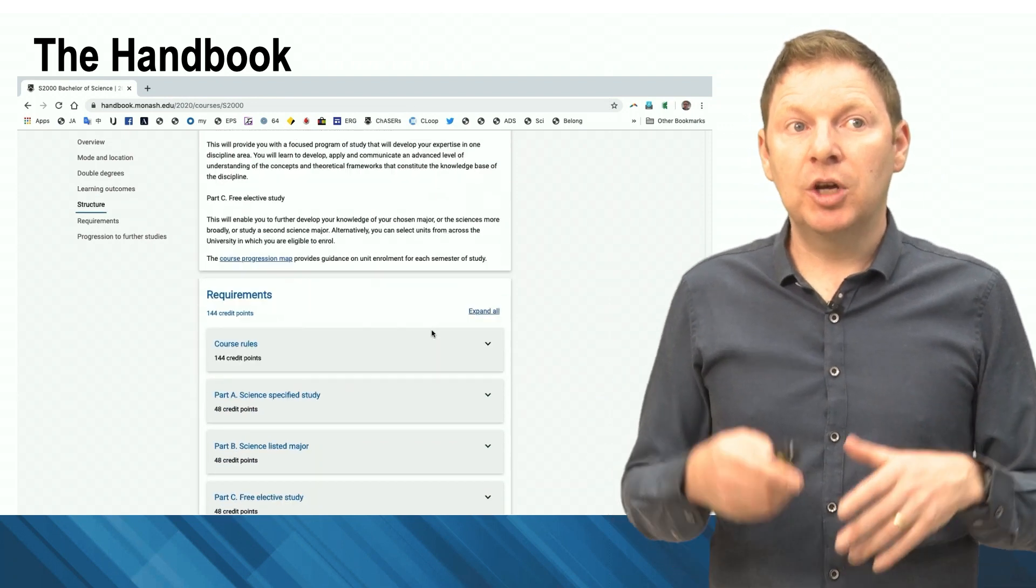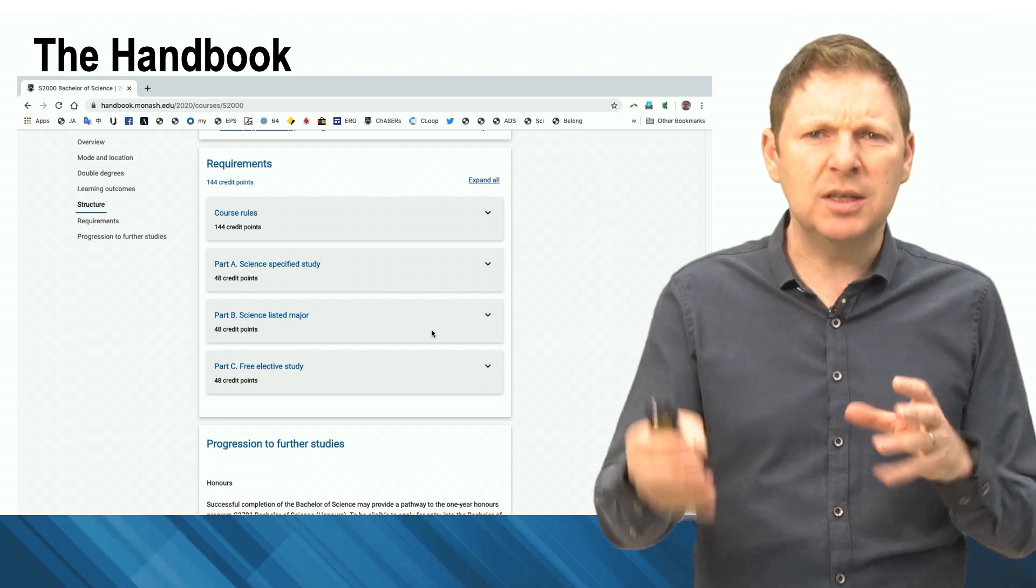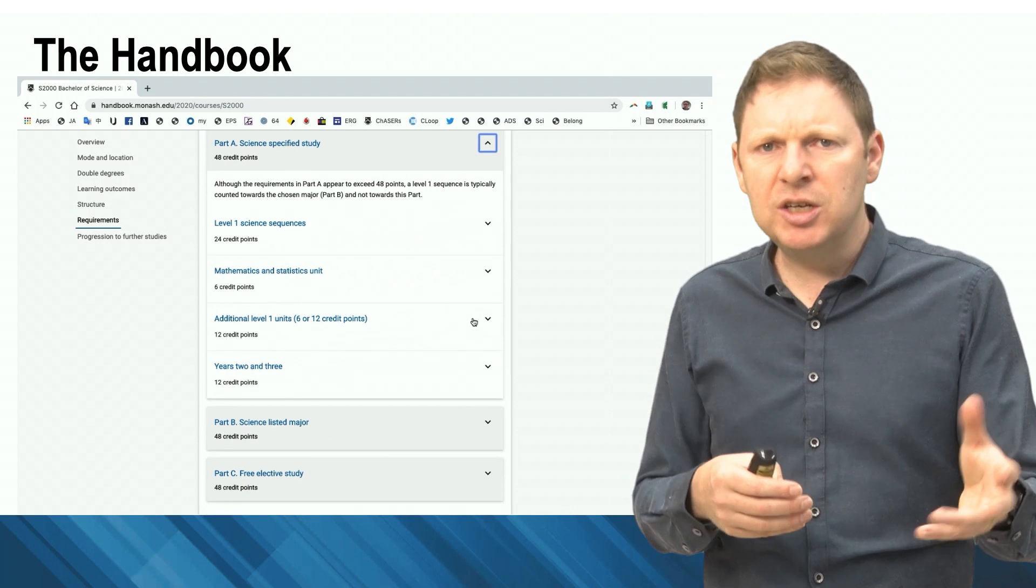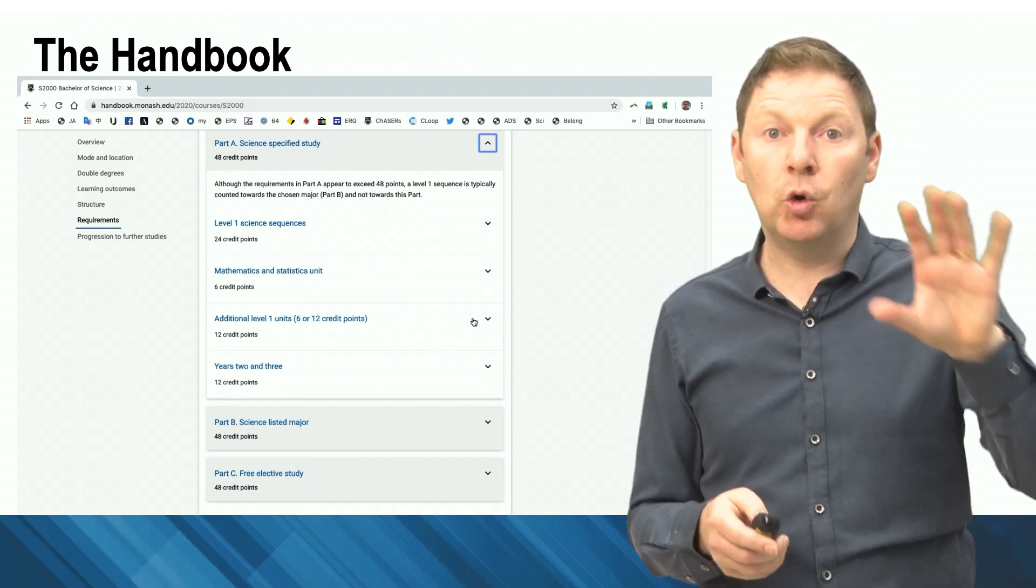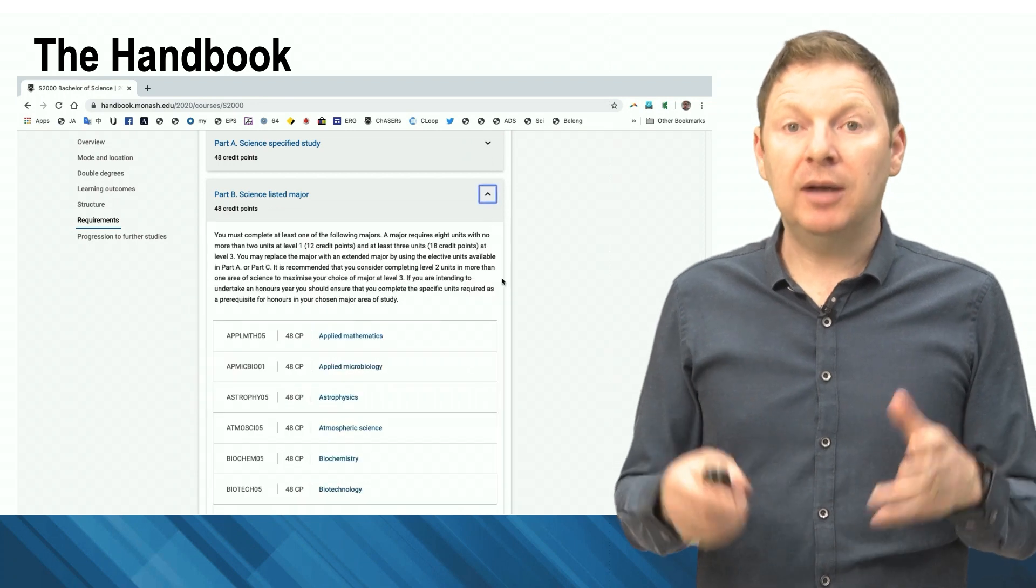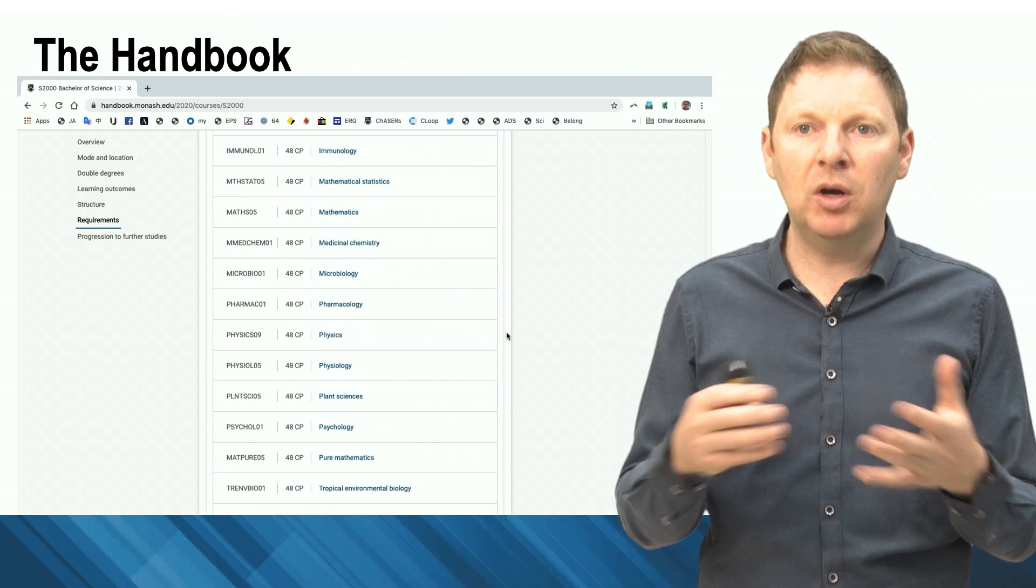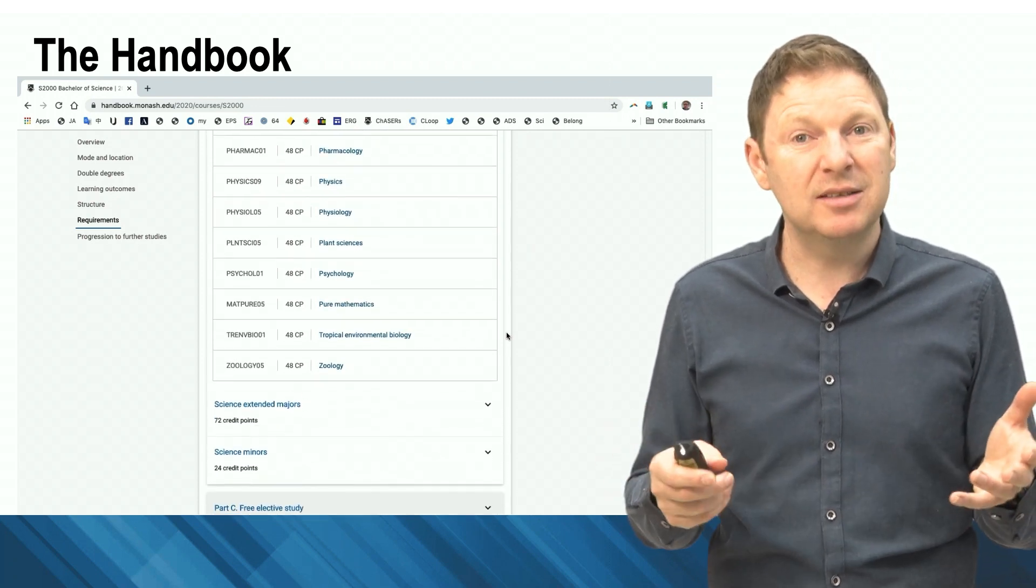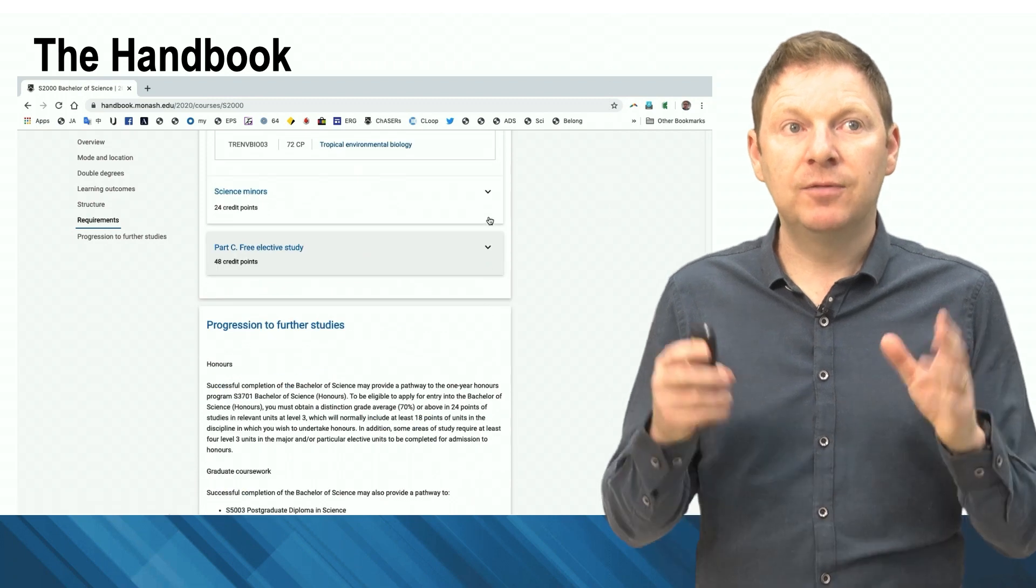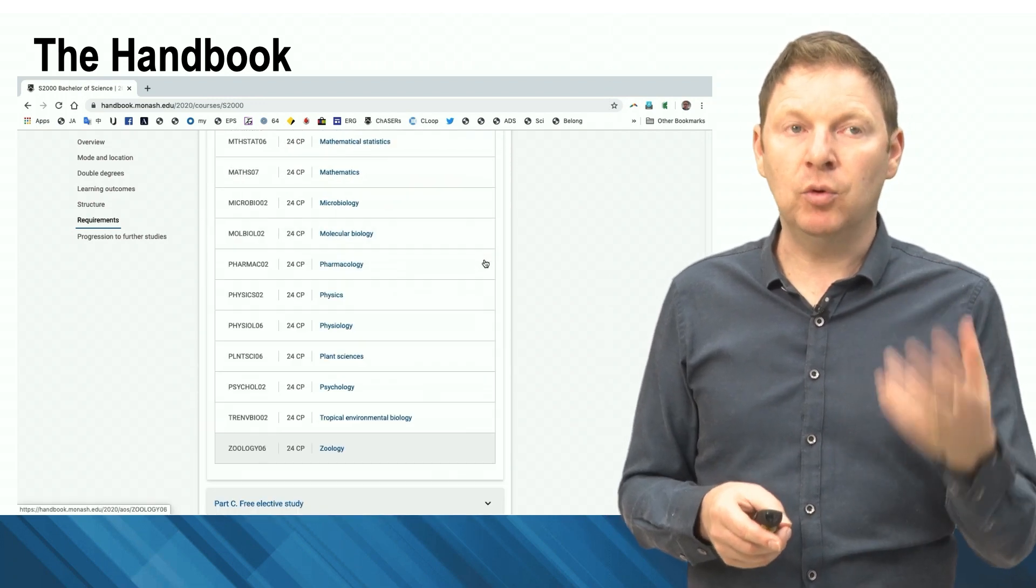So parts A, B, and C show you what's required as a part of the course. So part A - all of the course rules, the number of sequences you must do, the minimum number of second year and third year subjects you must do. It's all listed here. Moving on to the second part, this is where you can find all of the majors and the extended majors and the minors, and you can see it's a long list. There's lots of these things. So go down the list, find the ones that you're interested in, and then click on these to have a little bit more of an investigation.